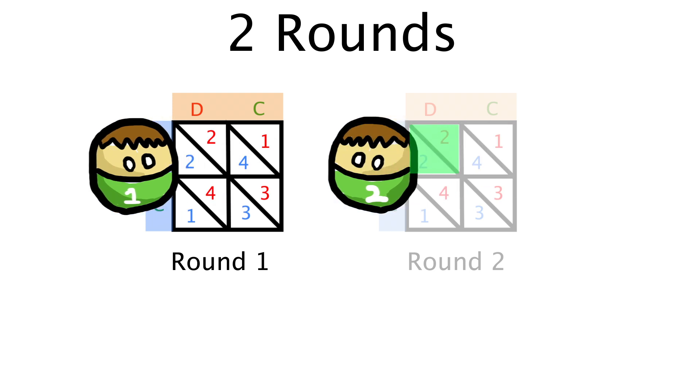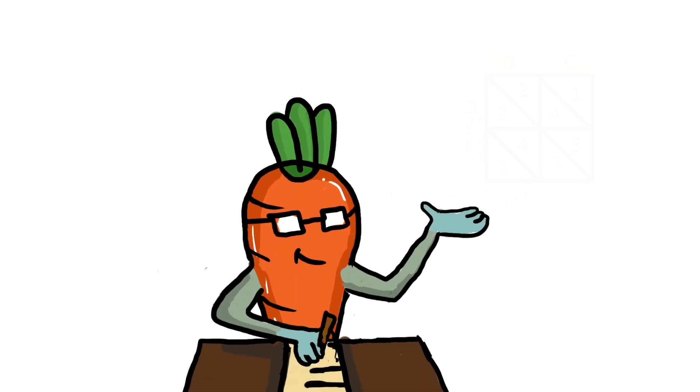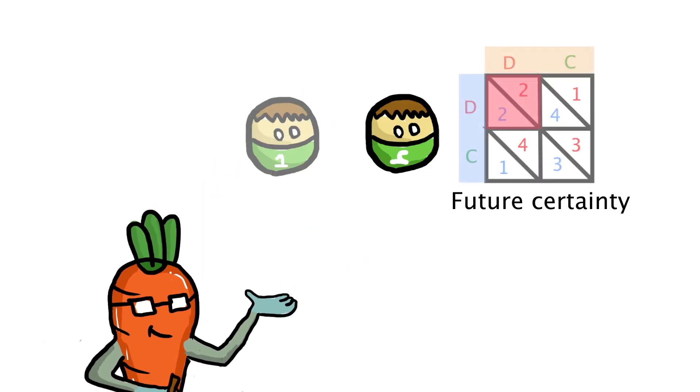So, whatever they do in round one will have no effect on the future, and so, they'll betray each other there too. Think of it this way. Because betrayal is an eventuality, the point of cooperating in the present is negligible.